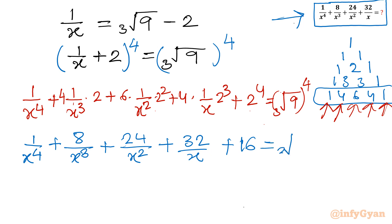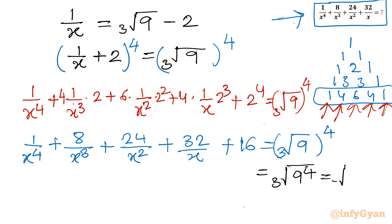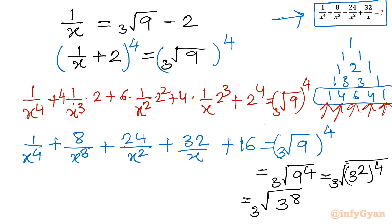Now applying the exponent property again — we can swap powers — the right-hand side becomes cube root of 9⁴. Writing 9 as 3², we get cube root of (3²)⁴ = cube root of 3⁸. So our equation is: E + 16 = cube root of 3⁸.